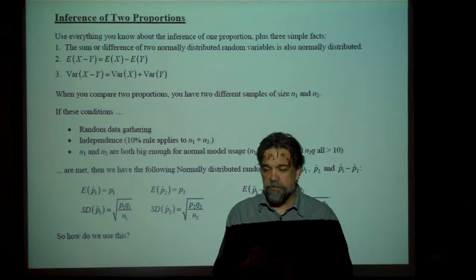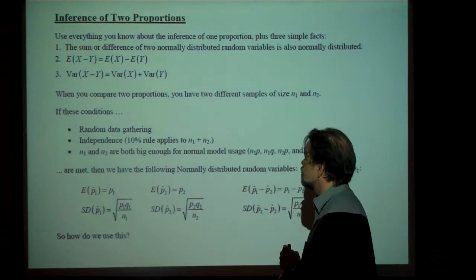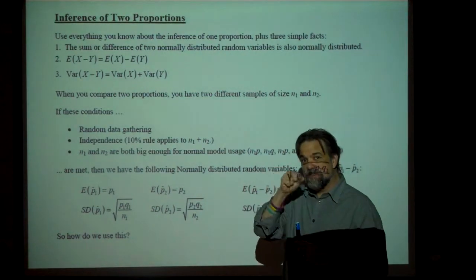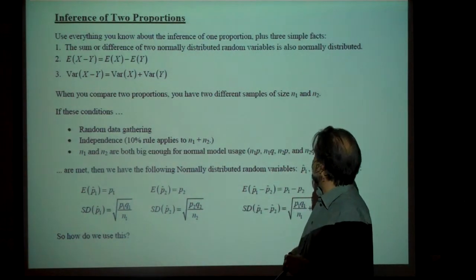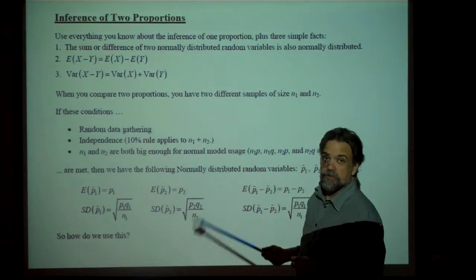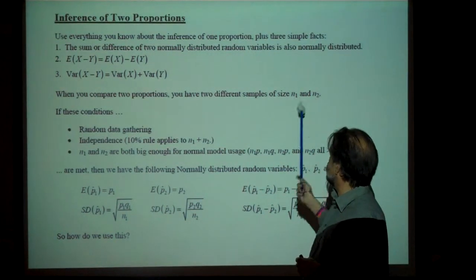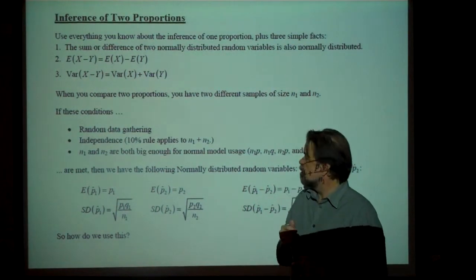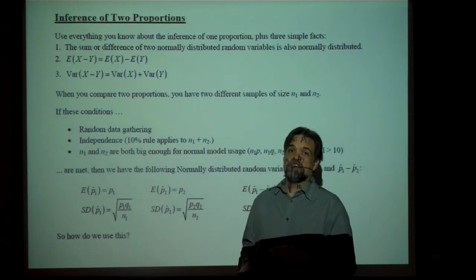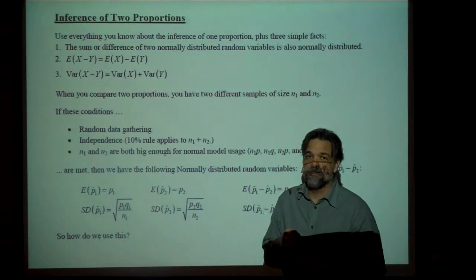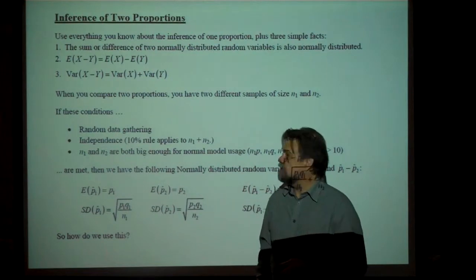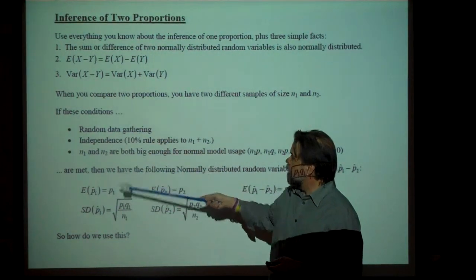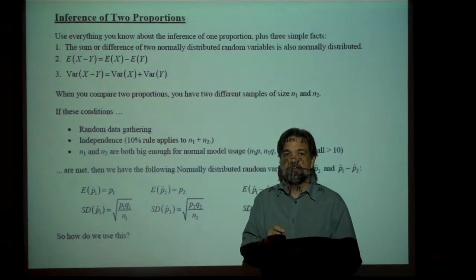So what does that bring us to? When you're comparing two proportions and looking at the difference between two sample proportions, you have two different samples of size N1 and N2 — the samples don't have to be the same size. We still have to meet conditions, just like with one-proportion inference, and the conditions are basically the exact same: random data gathering, independence, and making sure that N1 and N2 are big enough.